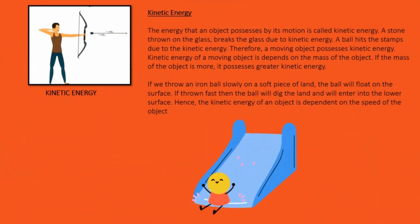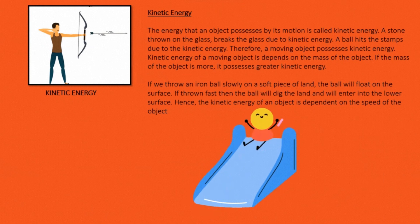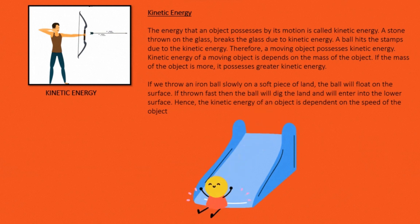Kinetic Energy: The energy that an object possesses by its motion is called kinetic energy. A stone thrown on the glass breaks the glass due to kinetic energy. A ball hits the stumps due to the kinetic energy. Therefore, a moving object possesses kinetic energy. Kinetic energy of a moving object depends on the mass of the object. If the mass of the object is more, it possesses greater kinetic energy.